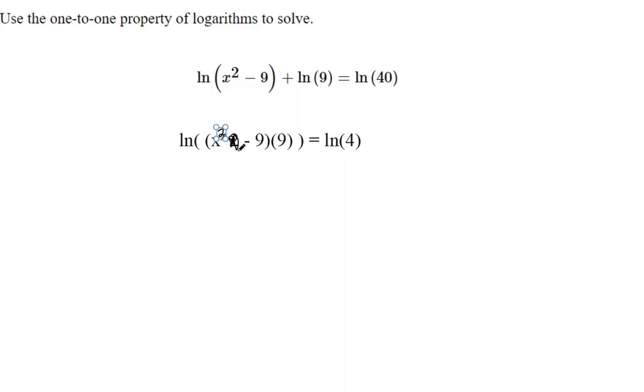This entire argument, x squared minus 9—that's why I put parentheses around that entire thing—times this 9 here. That's like our A, and that's like our B.